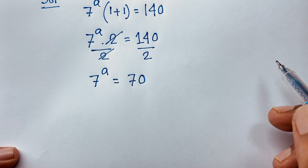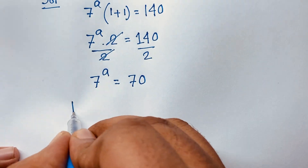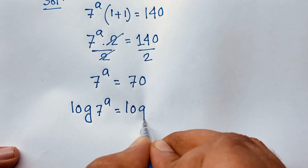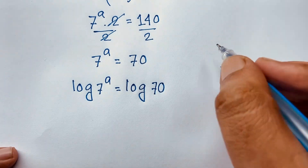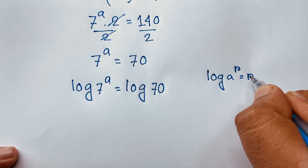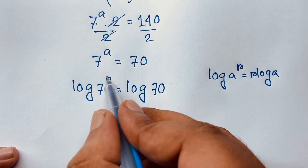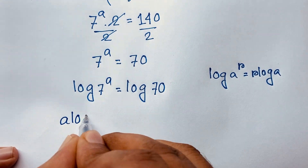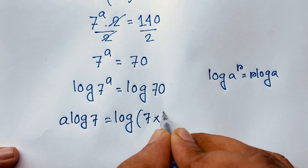Now to find a, I apply the natural log to both sides: log(7 to the power a) equals log 70. According to the log power rule, log(a to the power r) equals r·log a. So applying this, a·log 7 equals log 70, and log 70 equals log(7 times 10).